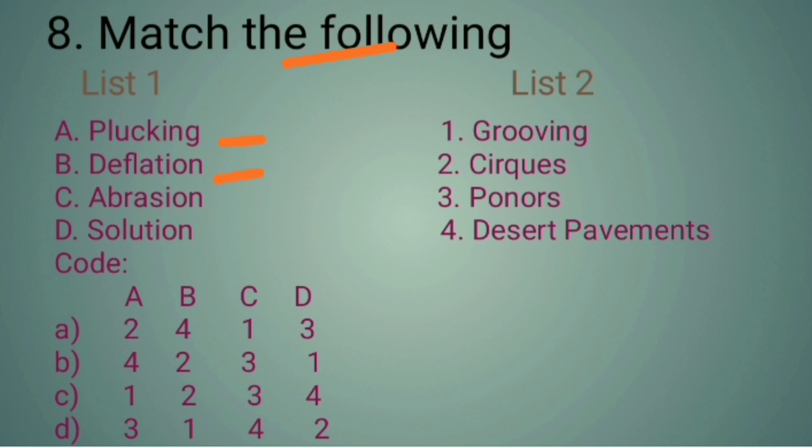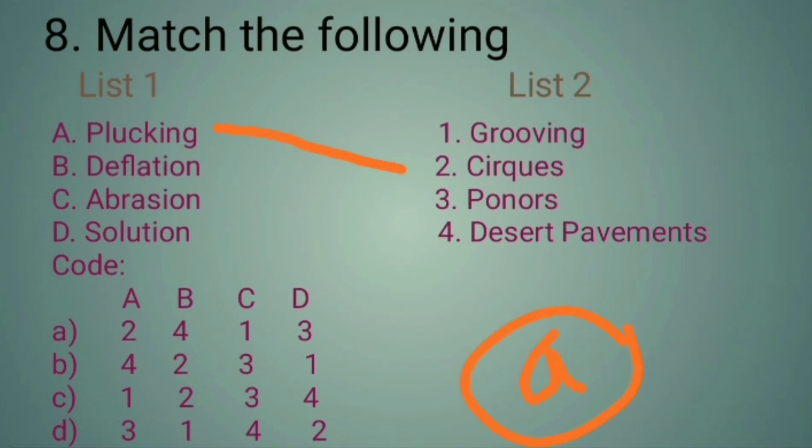The codes are: Option A: 2, 4, 1, 3. Option B: 4, 2, 3, 1. Option C: 1, 2, 3, 4. Option D: 3, 1, 4, 2. The answer is A. Option A is the correct answer: 2, 4, 1, 3. Plucking - Cirque, Deflation - Desert Pavement, Abrasion - Grooving, Solution - Ponors.